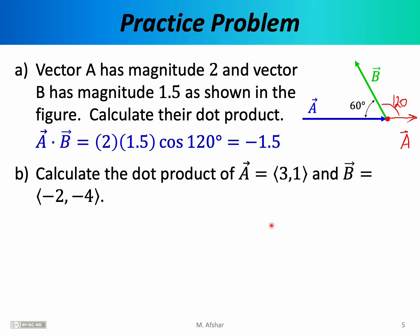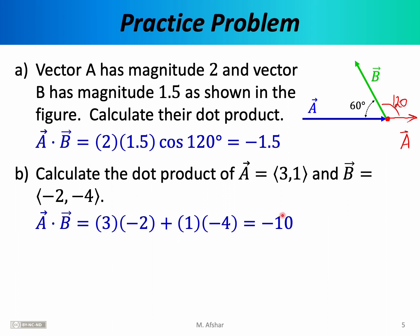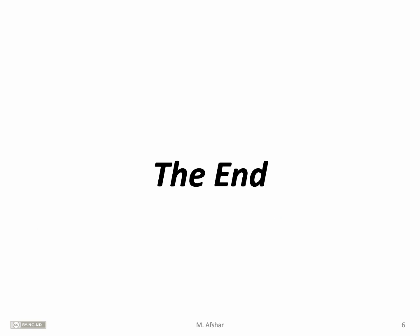Here's another problem. This time vectors A and B are given in terms of components: vector A is (3, 1) and vector B is (−2, −4). Since the Cartesian components are given, we'll use the component definition of the dot product. Multiply the x components: 3 times −2. Also multiply the y components: 1 times −4. Then add those results together, and we find that the dot product is −10. And that's the end of this lecture. Thank you for your attention.